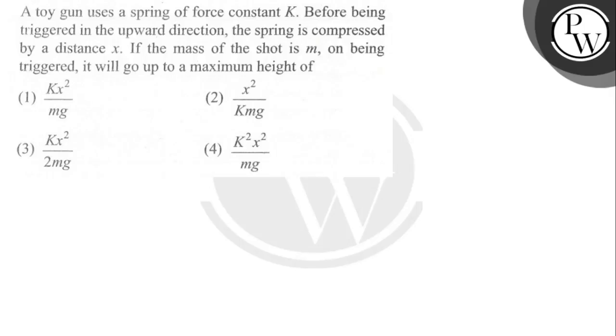Hello bachon, let's see this question. A toy gun uses a spring of force constant K. Before being triggered in the upward direction, the spring is compressed by a distance x. If the mass of the shot is m, on being triggered it will go up to a maximum height of first kx² upon mg.